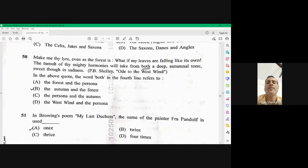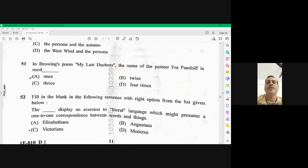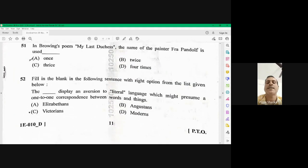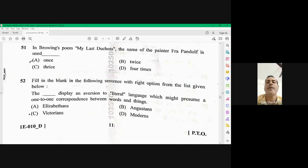Okay, next question. In Browning's poem, My Last Duchess, in the My Last Duchess, the name of the painter Fra Pendolf is used three times, thrice. 51 is C is the right option.